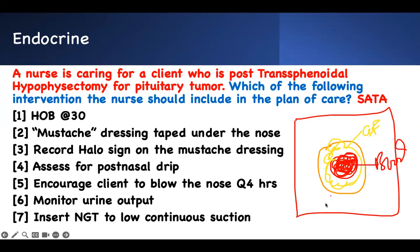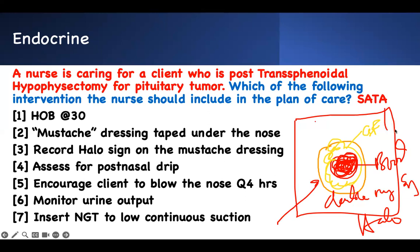We call it the double ring sign or the yellow sign. When you see that, there is a CSF leak. That's why you place a mustache dressing — tape gauze under the nose to collect the fluid so you can observe it.